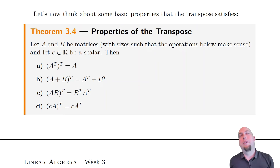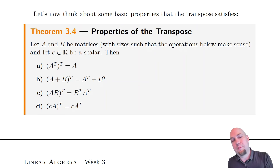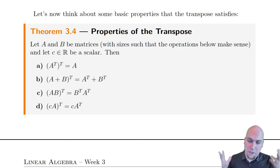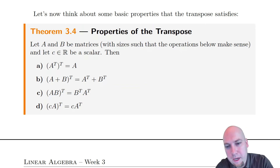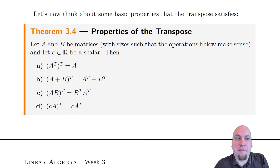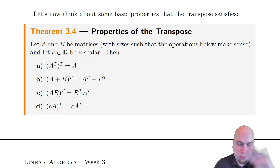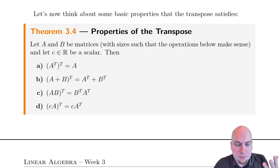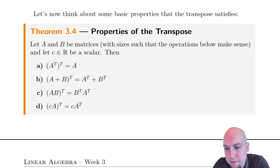As always, we've introduced a new mathematical operation, so let's look at what properties it has. Theorem time: what properties does the transpose of a matrix have? Three of these properties are going to be very unsurprising, so I'll go over them quickly. The other property, though, is quite surprising, so that's the one we're actually going to prove.